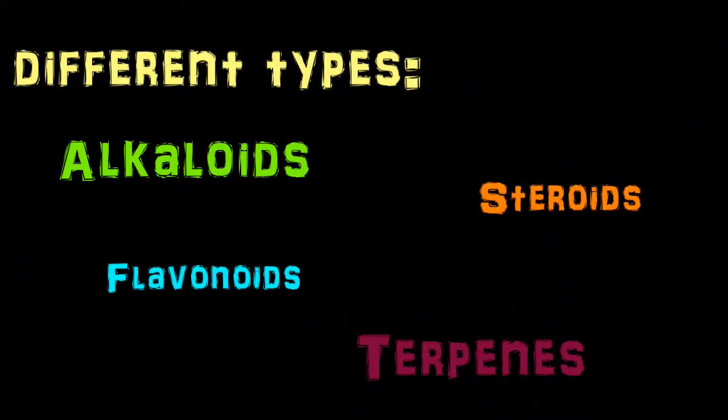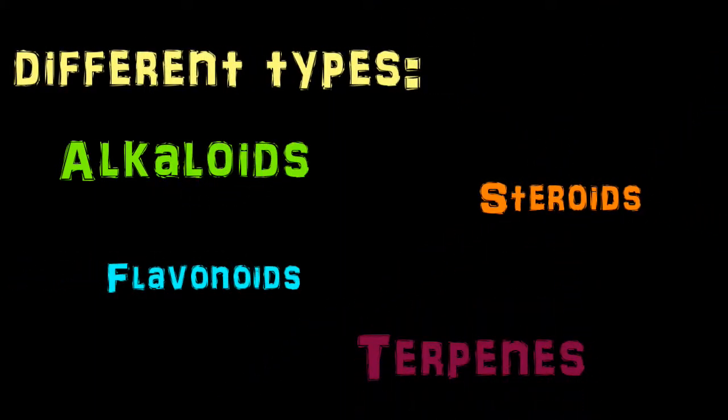Natural products have different types such as alkaloids, steroids, flavonoids, and terpenes. But today, what we'll focus on is terpenes. What are terpenes?